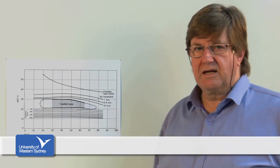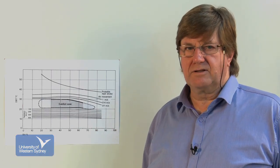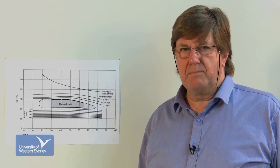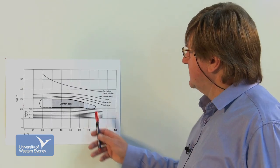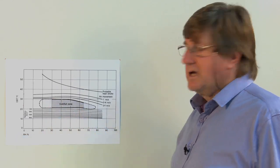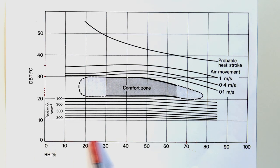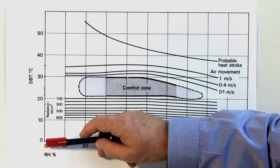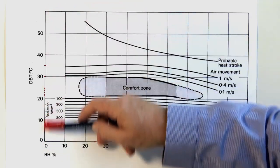To make it clearer we have what's called a bioclimatic chart. The bioclimatic chart clearly identifies the comfort zone. On the x-axis we have the relative humidity. On the y-axis we have the dry bulb temperature.